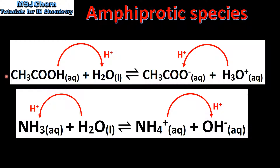In the previous video we looked at these two reactions. In the top reaction, the ethanoic acid is donating a proton to the water molecule. In the bottom reaction, the water molecule is donating a proton to the ammonia. In the top reaction, the ethanoic acid, which is the proton donor, is the Brønsted-Lowry acid, and the water, which is the proton acceptor, is the Brønsted-Lowry base. In the bottom reaction, the water is the proton donor — therefore it's the Brønsted-Lowry acid — and the ammonia is the proton acceptor, so it's the Brønsted-Lowry base.